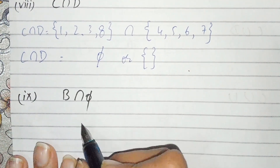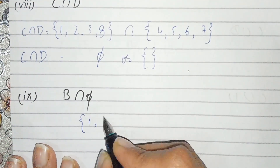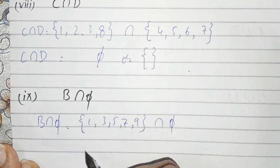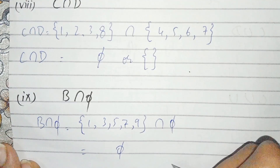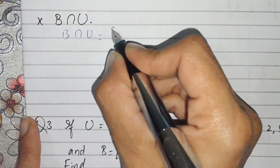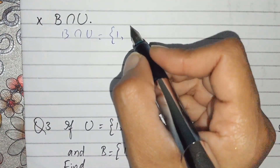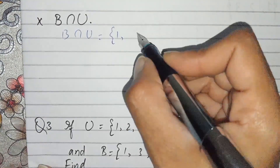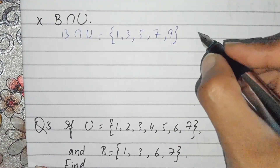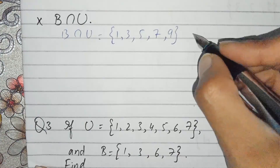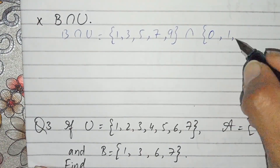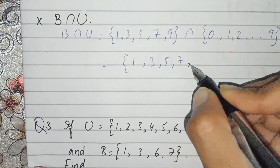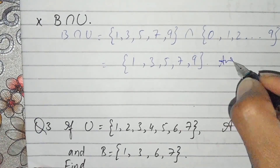Part number nine: intersection with the empty set obviously gives the empty set. The intersection with the empty set gives the empty set, and part nine is solved. Part number ten: B intersection U. B is {1,3,5,7,9} and U is {0,2,9}. The common values are... we get {5,7,9}. This is the answer to part ten, and question number two is solved.